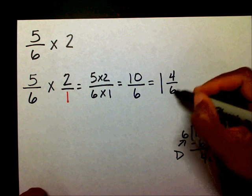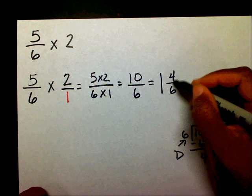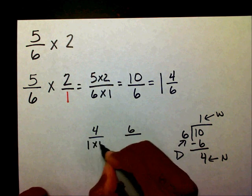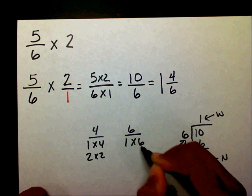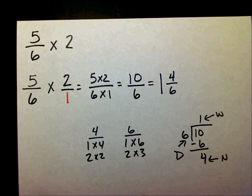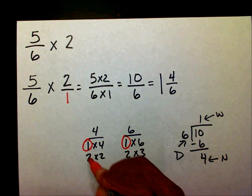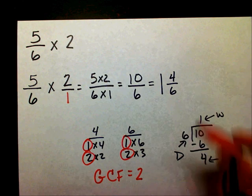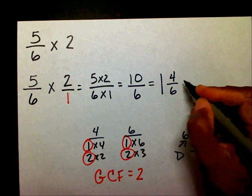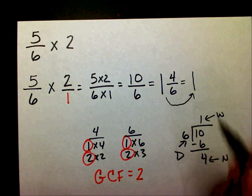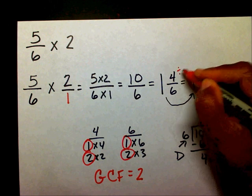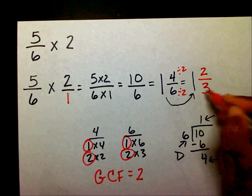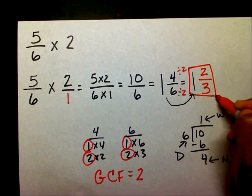Since I have two even numbers, I need to find my greatest common factor so I can reduce this. I'll list my factors for 4 and 6. Factors for 4 are 1 times 4 and 2 times 2. Factors for 6 are 1 times 6 and 2 times 3. My common factors are 1 and 2, but my greatest common factor is 2. So I'll divide the 4 by 2 and the 6 by 2. 4 divided by 2 is 2, and 6 divided by 2 is 3. So my final answer is 1 and 2 thirds.